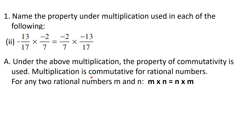Multiplication is commutative for rational numbers. It means while multiplying you do not have to take into account the order in which the numbers are written. On the left hand side, minus 13 upon 17 is written first, and on the right hand side it is written in the second position, but it will not affect the product or the end result. In general terms, for any 2 rational numbers m and n, m into n is equal to n into m.